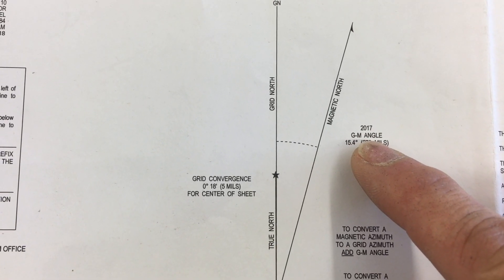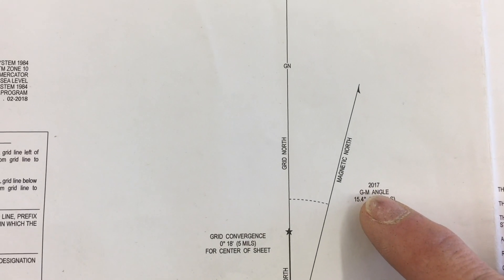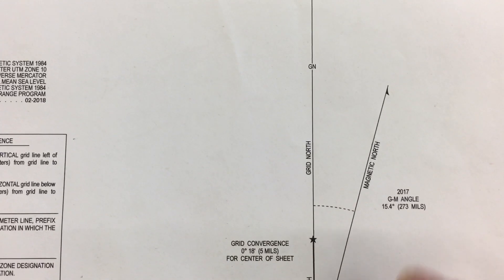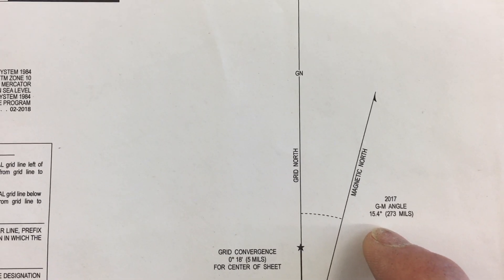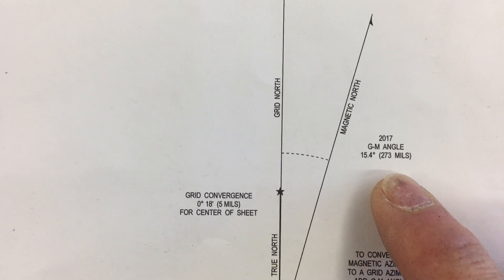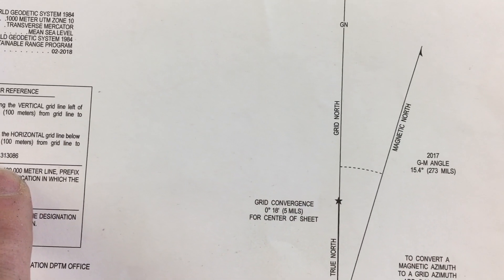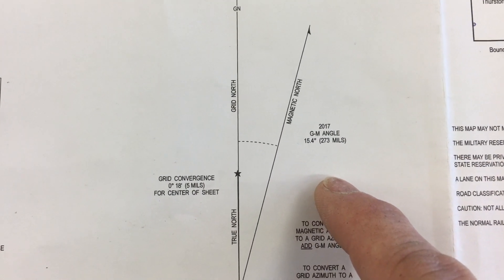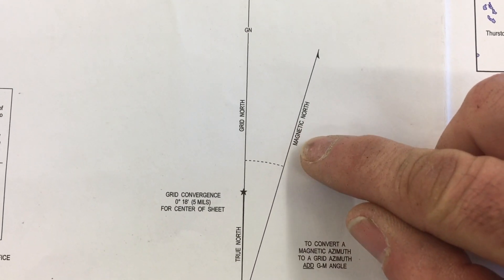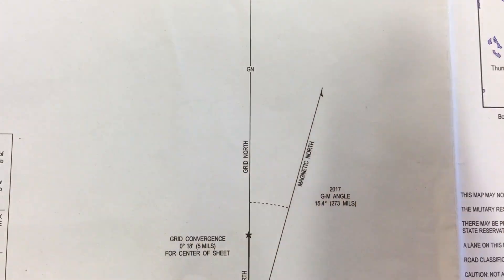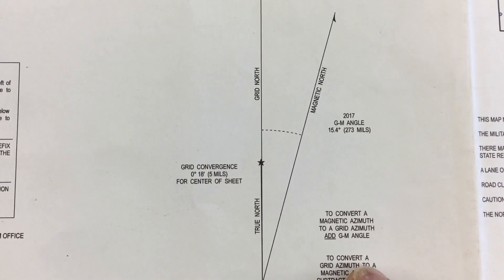The Washington map is as of 2017 and the Texas map as of 2018. It's important to know the date because magnetic declination changes over time — where it's 15.4 degrees now, five years ago it may have been around 13 degrees and five years from now it could be upwards of 20. Washington State has a greater GM angle compared to Texas because we're further north and further east from the magnetic pole. This matters because a compass always points toward magnetic north, so you must account for the GM angle when converting between magnetic and grid azimuths.